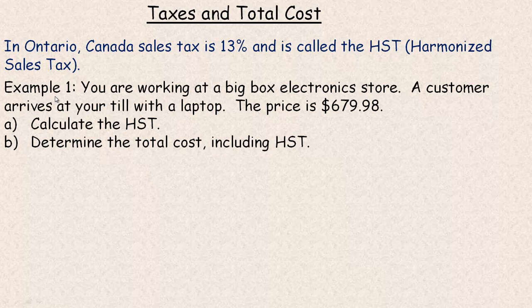A couple of examples. The first one says you're working at a big box electronics store and a customer arrives at your till with a laptop. The price is $679.98, and maybe the power is out — but normally you'd use that till or computer to calculate the cost. So sometimes you might need to actually do this calculation manually.